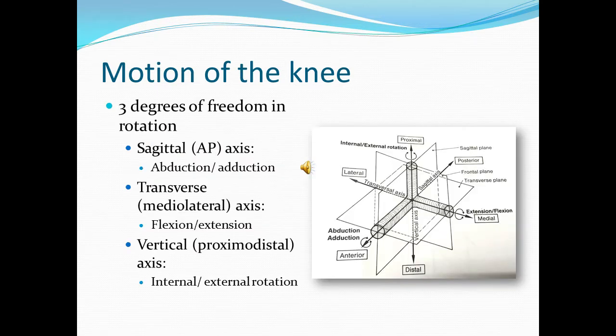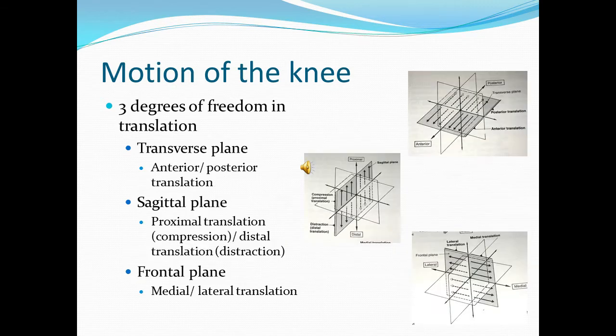There are three degrees of freedom in rotation: abduction and adduction in the sagittal axis, flexion and extension in the transverse axis, and internal and external rotation in the vertical axis. There are three degrees of freedom in translation: anterior and posterior translation in the transverse plane, proximal and distal translation in the sagittal plane, and medial and lateral translation in the frontal plane.